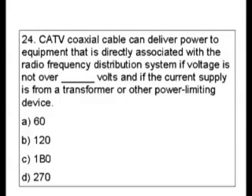Question 24. CATV coaxial cable can deliver power to equipment that is directly associated with the radio frequency distribution system if voltage is not over blank volts and if the current supply is from a transformer or other power limiting device. Our choices are A: 60, B: 120, C: 180, or D: 270.